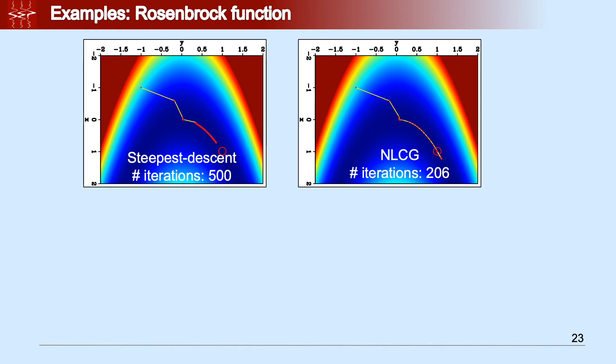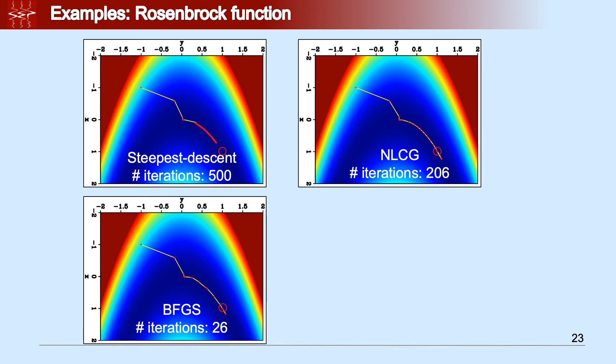On the other hand, after 206 iterations, nonlinear conjugate gradient successfully finds the minimum. However, the optimal or the ideal minimizer or solver is BFGS. In fact, after 26 iterations, it finds the minimum without any problem.